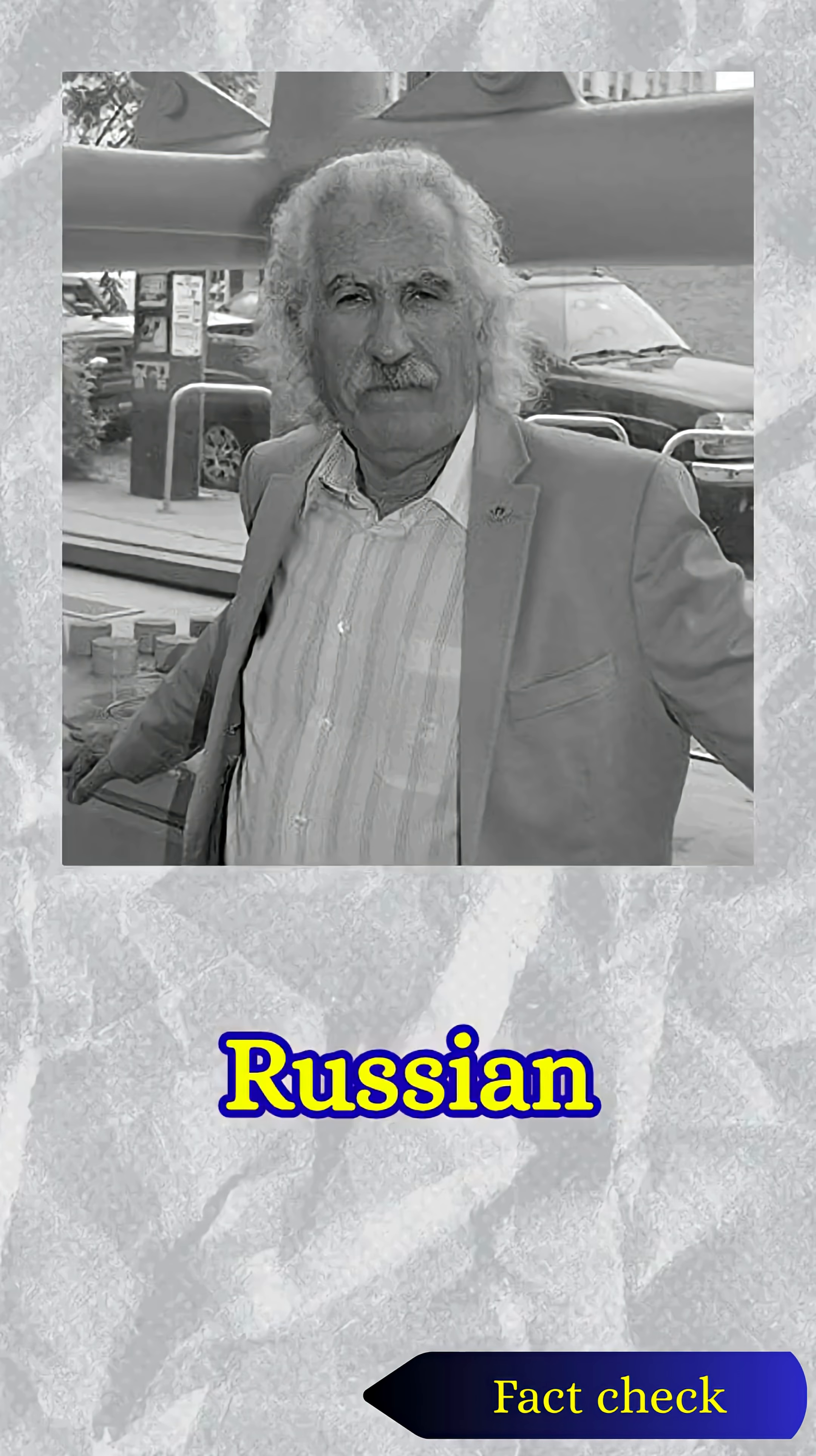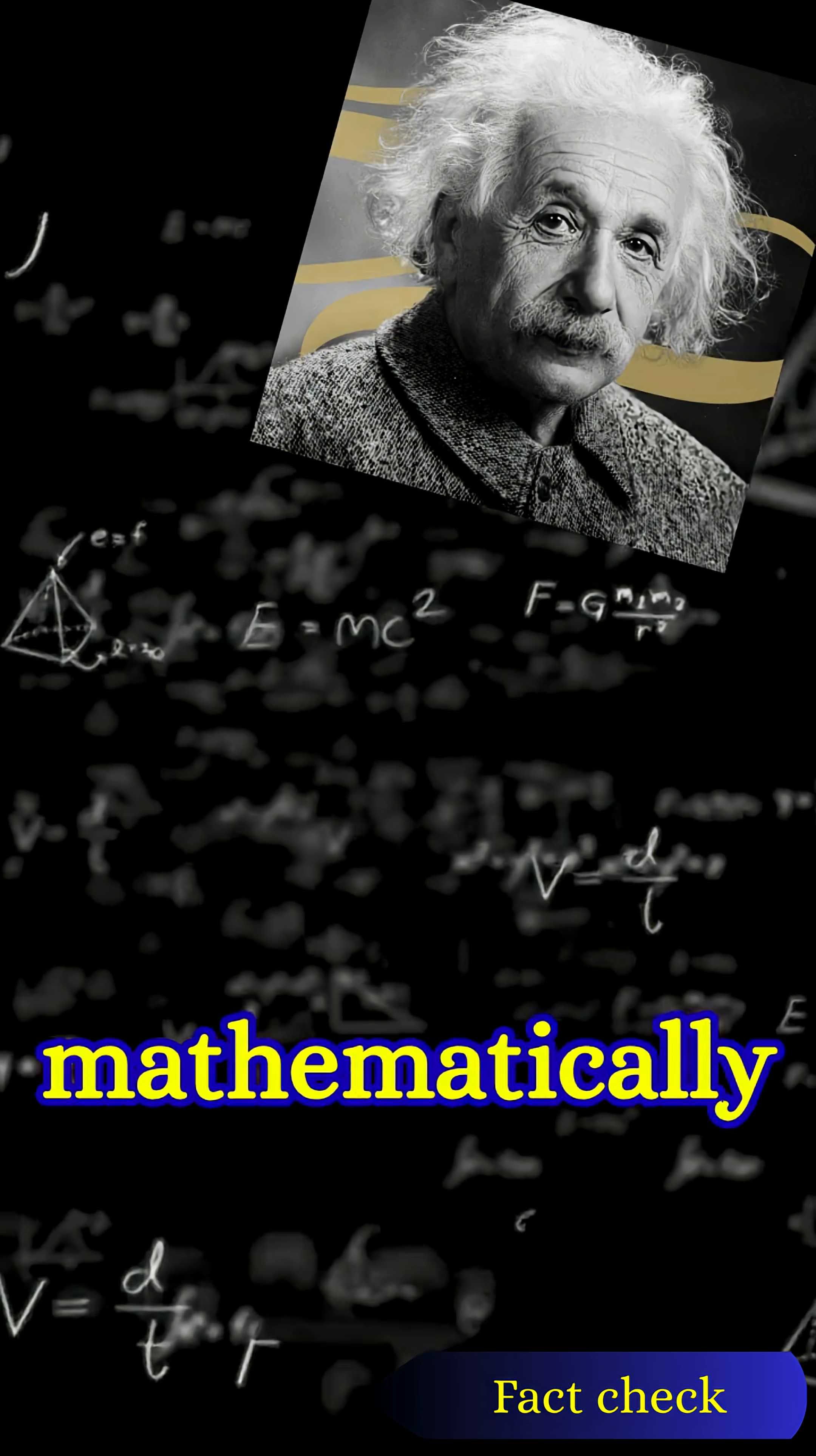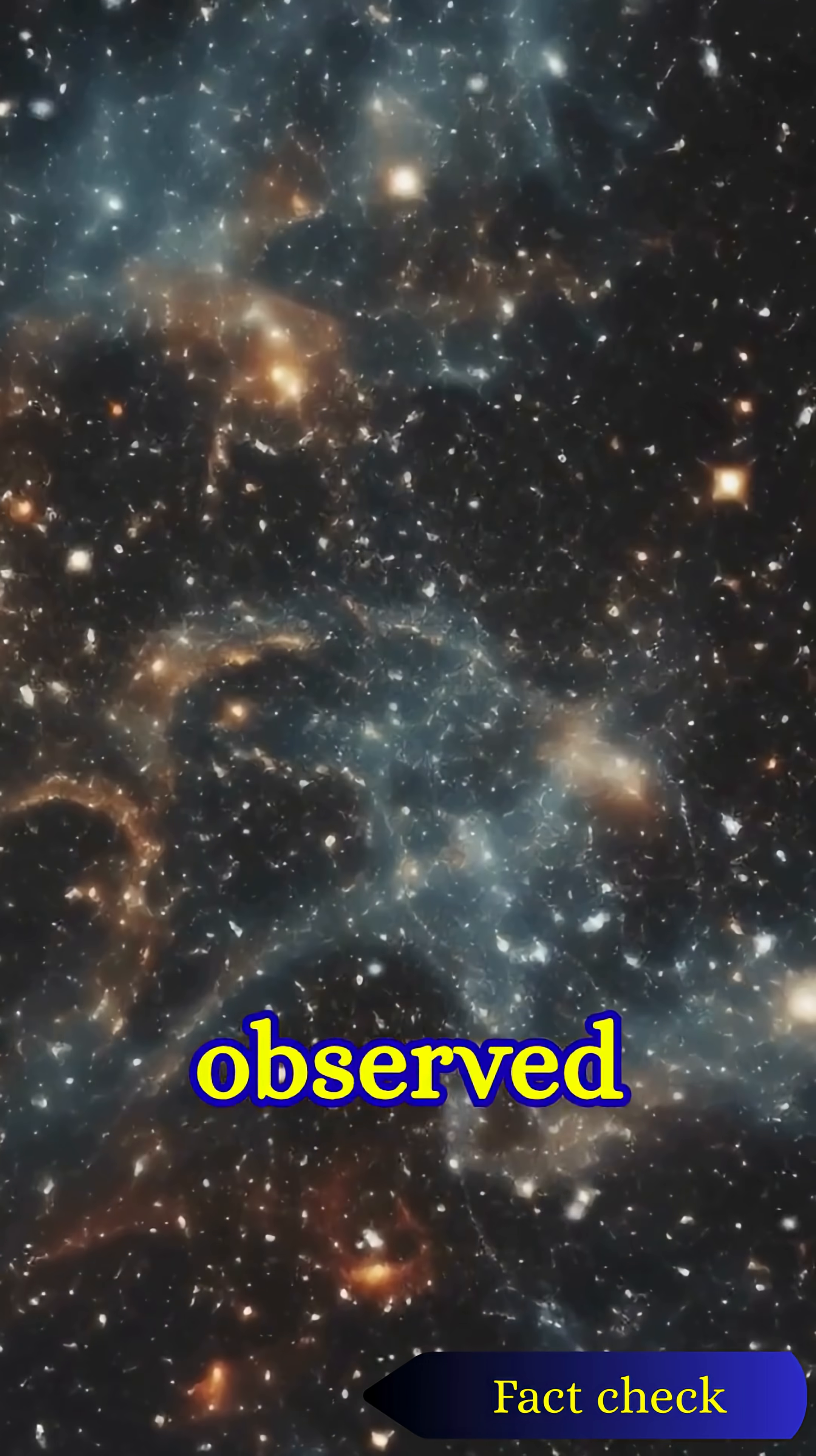In 1922, Russian physicist Alexander Friedman used Einstein's equations to show mathematically that the universe could be expanding, even before anyone had observed it.